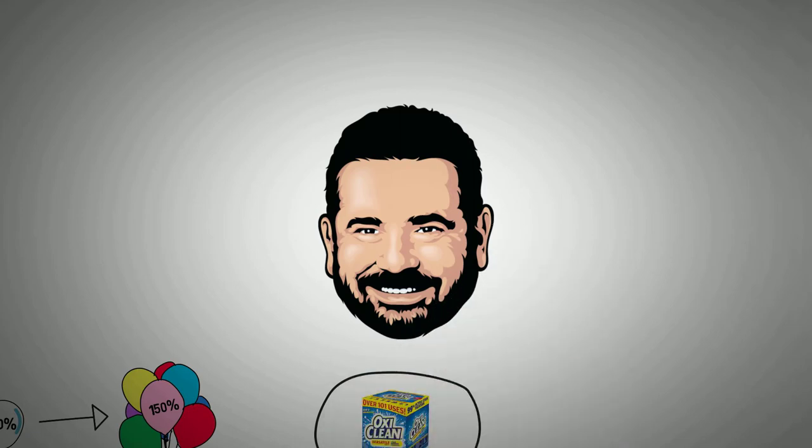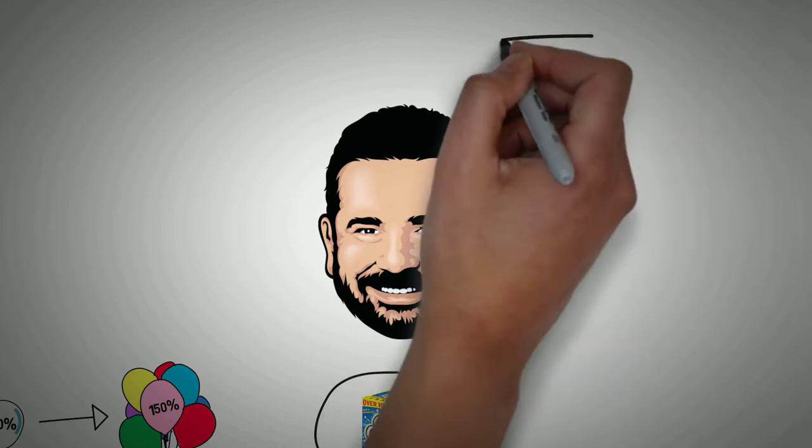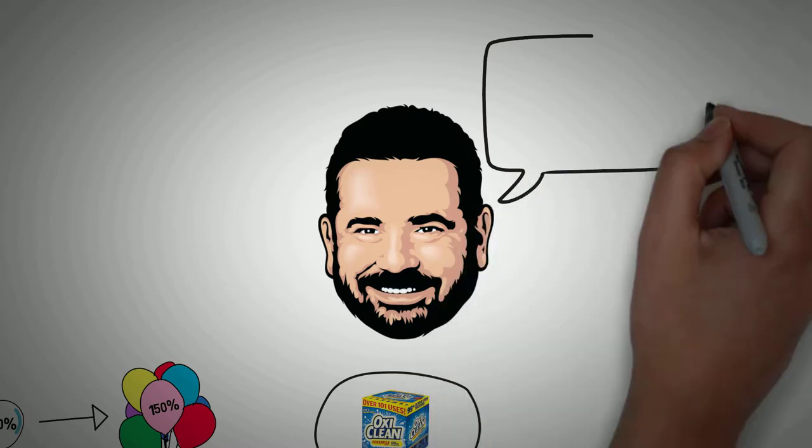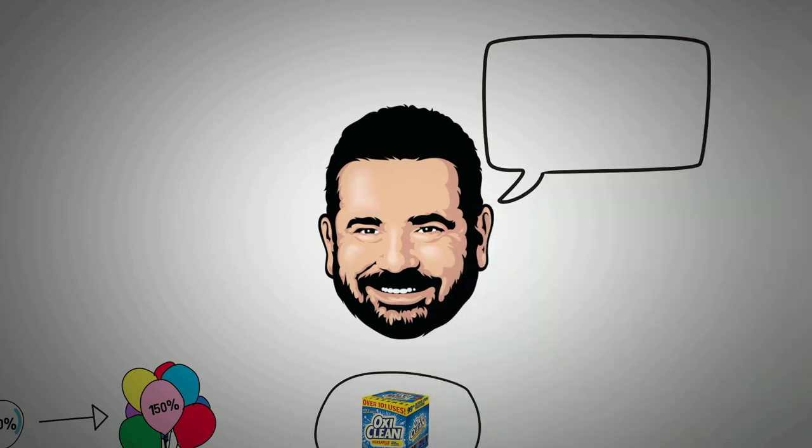He says, 'Have you ever had this happen? And it ruined your shirt? OxiClean is going to make your life better.' I think, 'That has happened to me, and I would like my life to be better. Billy Mays gets me. What else you got, Billy?'